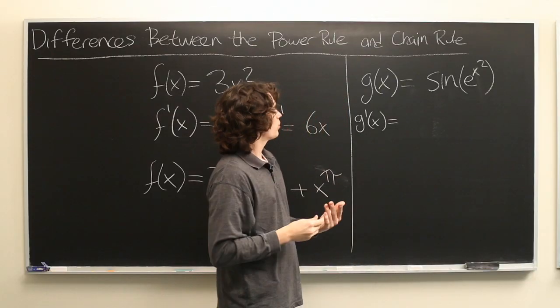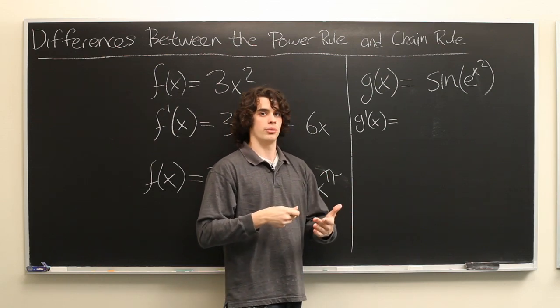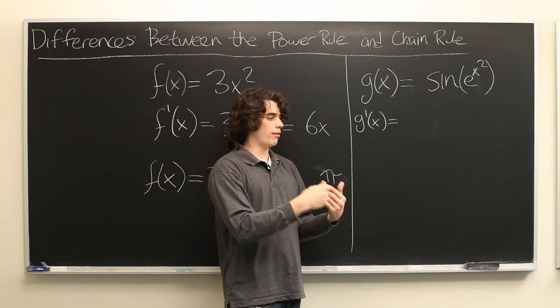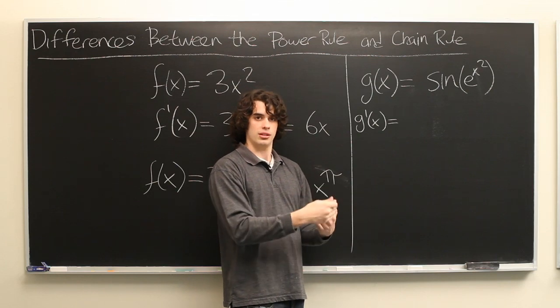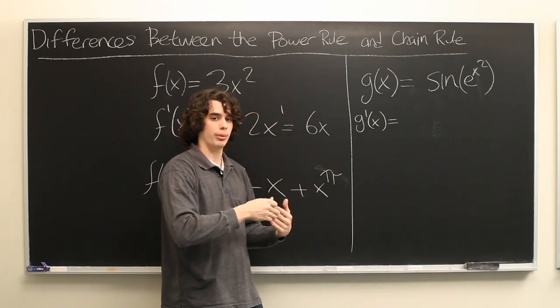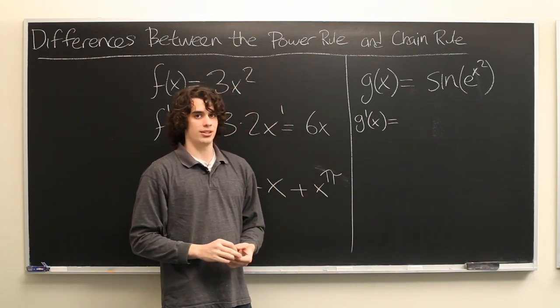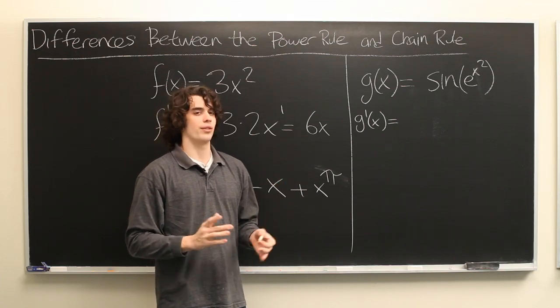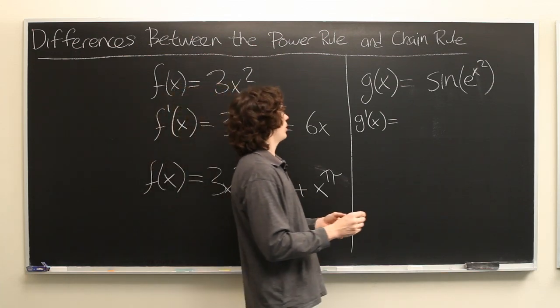The simplest way to remember the chain rule is the following phrase. You take the derivative of the outside with the inside the same, multiplied by the derivative of the inside. It may be kind of confusing unless you've seen it already, but let's walk through it.